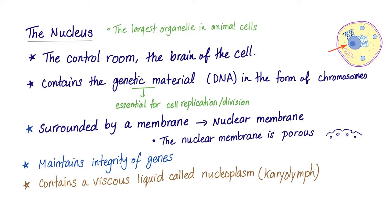The genetic material or DNA is essential for replication or cell division. The nucleus is surrounded by a membrane called, voila, nuclear membrane. The nuclear membrane has pores. The nucleus maintains the integrity of genes. The nucleus contains a viscous liquid called nucleoplasm, also known as karyolymph.